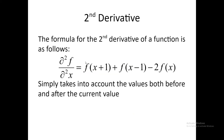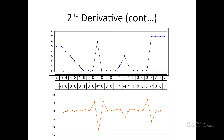Now let us look at the second derivative. The second derivative becomes f(x+1) + f(x-1) - 2·f(x). For one pixel this becomes 5 + 4 - 10 = -1. For another it will be 5 + 3 - 2×4 = 8 - 8 = 0. Similarly for another pixel it is 6 - 2×3 = 0 again. For the interesting isolated point it will be 0 + 0 - 2×6 = -12.